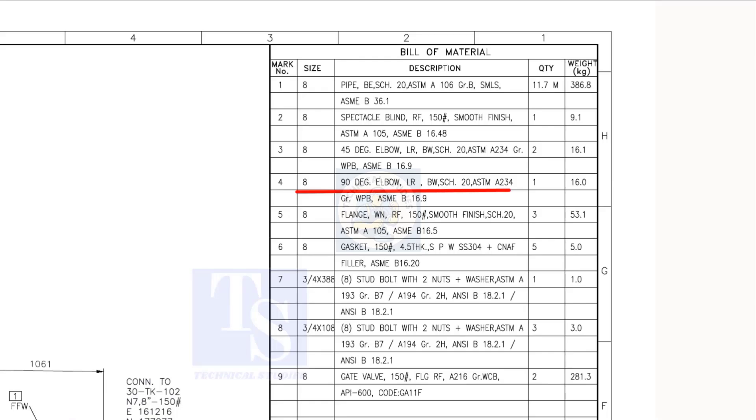As per the list, item number 4 is a 90-degree long radius elbow. Let us fabricate this spool.